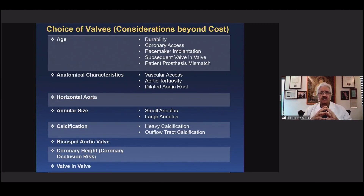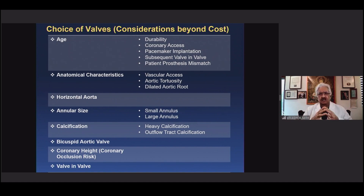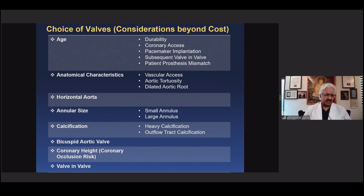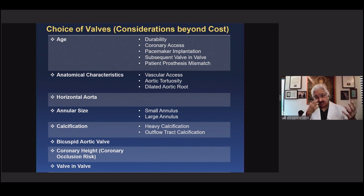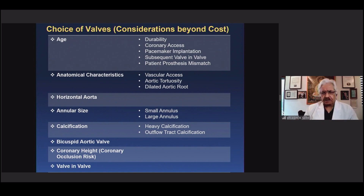My checklist for deciding on valves: Age — as we move to younger patients, durability favors the Evolute Pro platform. Coronary access — if normal, Evolute Pro is fine; if diseased coronaries with prior stents or borderline disease, I prefer a balloon expandable valve for future coronary access. Pacemaker implantation rates are lower with balloon expandable valves, but with Evolute Pro using the cusp overlap view, implantation rates can be kept below 10% — we achieve around 8% at our center. So balloon expandable has the edge, but Evolute Pro can be mastered for low pacemaker rates.